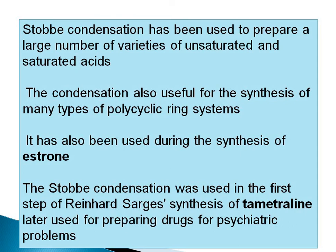Stobbe condensation is very useful for synthesizing many varieties of compounds. Unsaturated acids obtained can be hydrogenated (reduced) to give saturated acids. This condensation is useful for synthesis of polycyclic ring systems, and also for synthesis of estrone (an important hormone). Additionally, Stobbe condensation is used in the Renard-Sagist synthesis of tamitraline, which is used in psychiatric drug preparation for mental ailments.